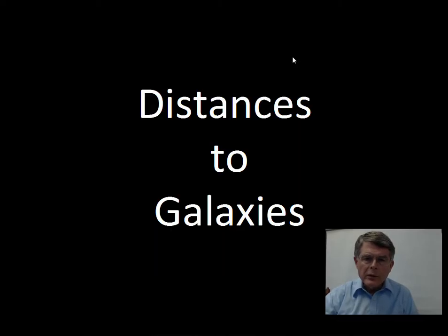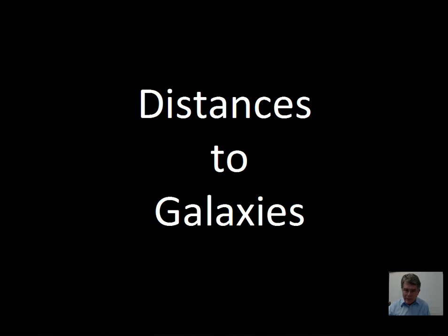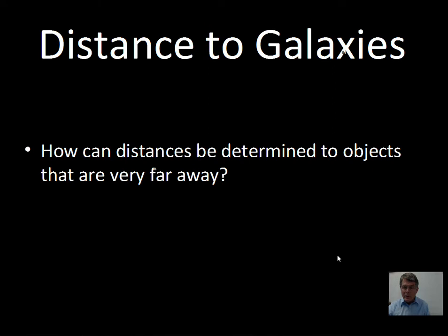In this video we're going to review the methods that astronomers use to find the distances to galaxies. Distance is a very important number. It's needed for making a graph of Hubble's law with distance on the horizontal axis, to understand how much energy a galaxy is putting forth, and to measure the size and physical dimensions of a galaxy. Astronomers have put forth a great deal of effort to come up with methods to determine distances to galaxies.